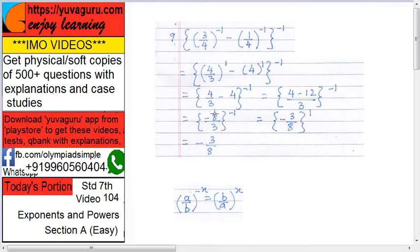Now just reverse this, so this becomes plus minus 3 upon 8 raised to 1, so remove this one, minus 3 upon 8 is the answer.